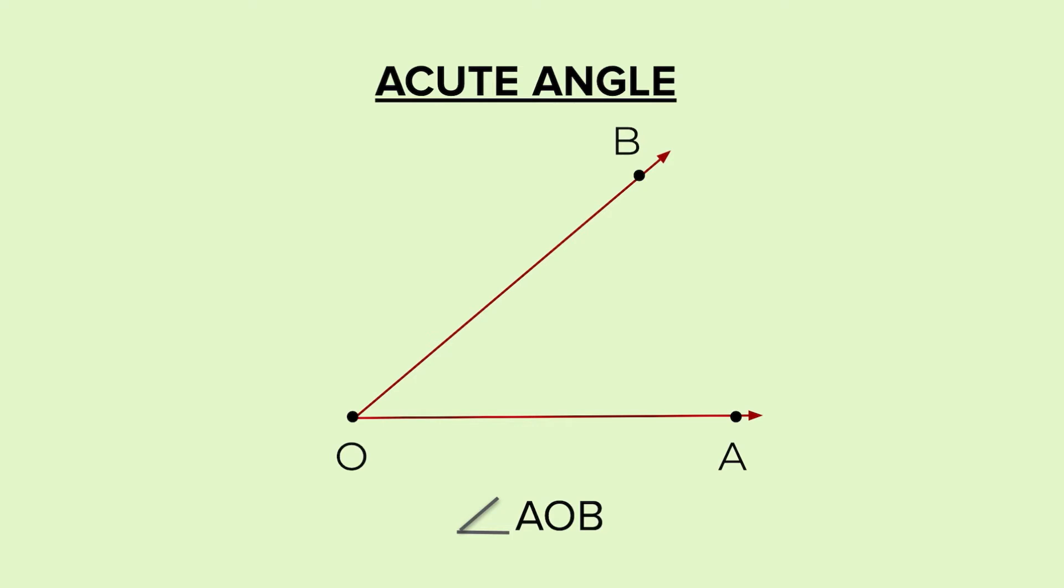Acute angle is any angle that is less than 90 degrees. 90 degrees angle would be a line perpendicular to the base ray. Now any angle that is greater than 90, that is on the left side, that would be obtuse angle.